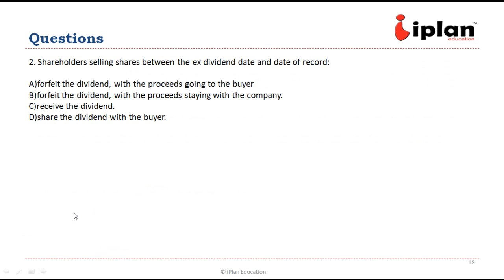Question two: shareholders selling shares between the ex-dividend date and the date of record. The ex-dividend date is the date on which the shareholder will receive the dividend if holding the share before this date. In this case, shareholders are selling after the ex-dividend date and before the date of record, so they will still receive the dividend. C is the right answer.